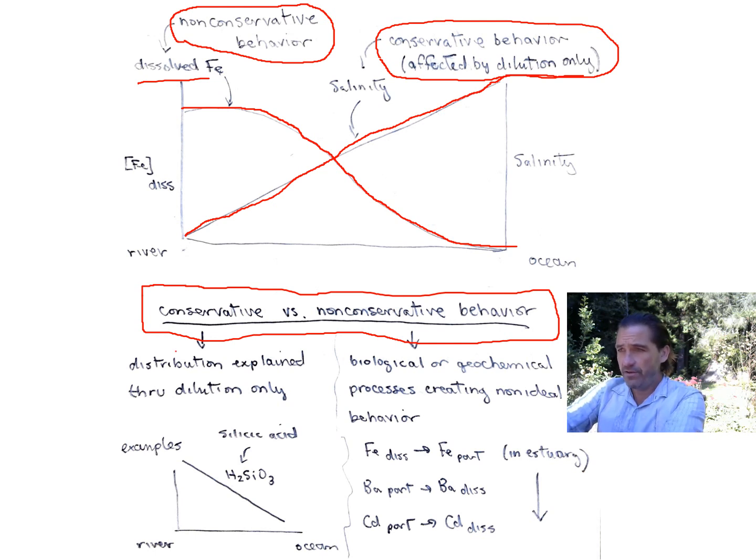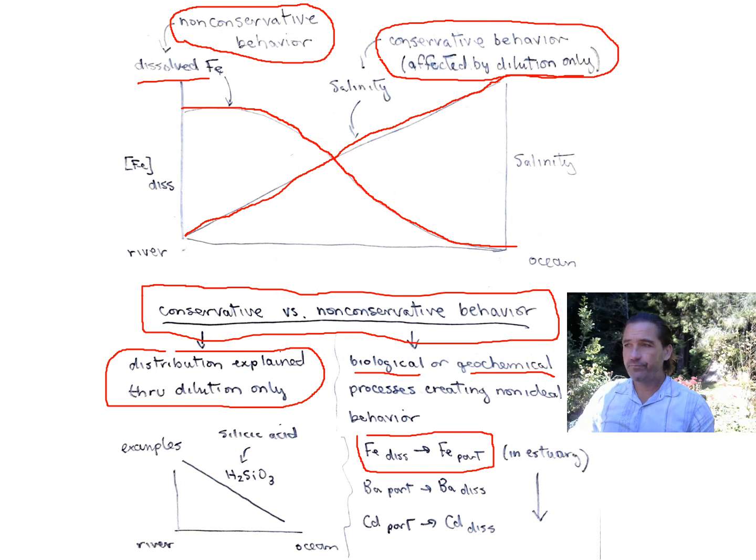The last part of this video, I want to talk a little bit more about conservative and non-conservative behavior with respect to elements. Conservative behavior can be explained totally through dilution. However, these non-conservative behaviors, they are dictated by biological or geochemical processes, and this is what creates what we'd consider non-ideal behavior. And so we went through an example showing how iron in the estuary behaves non-ideally, non-conservatively.